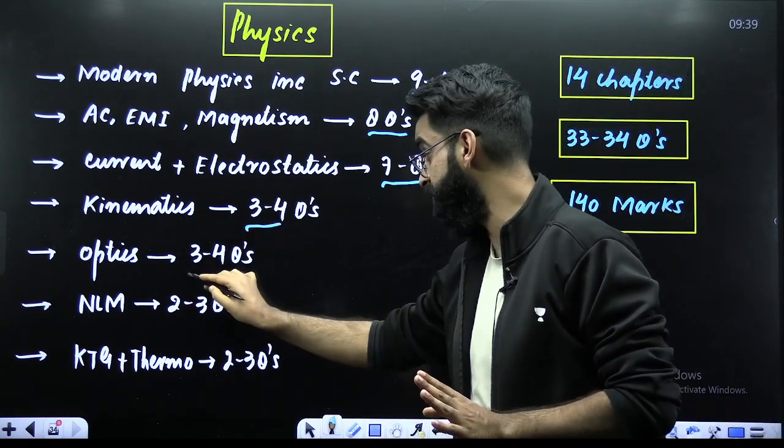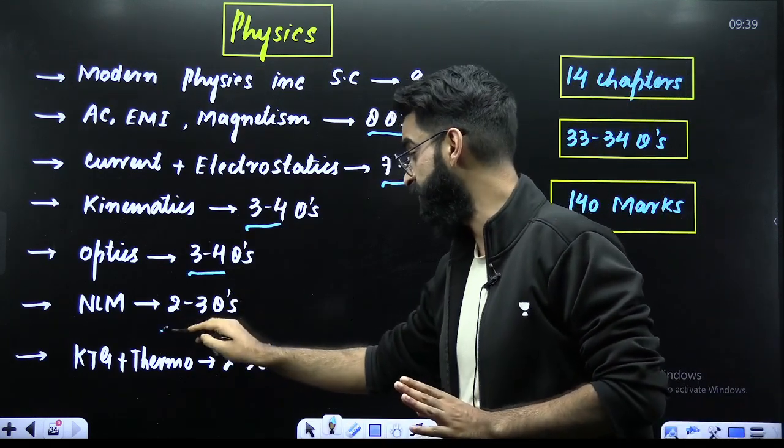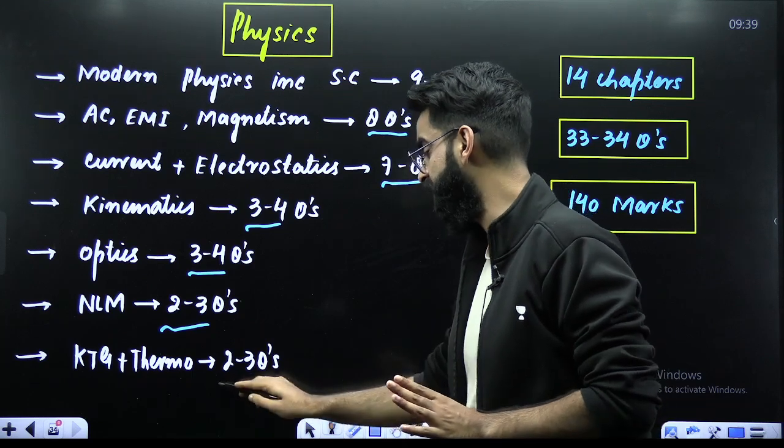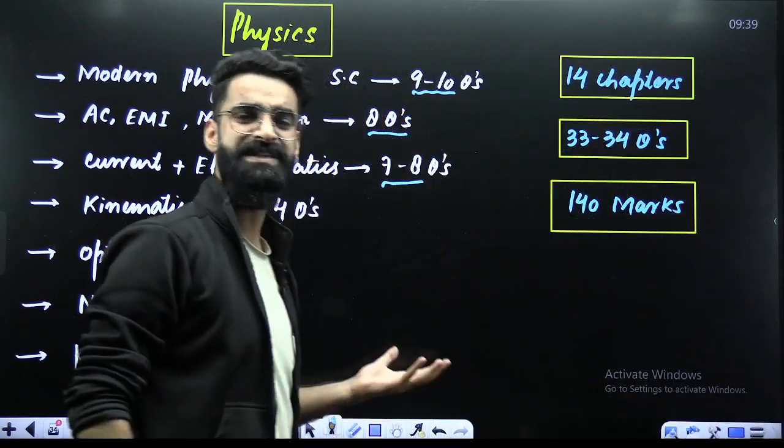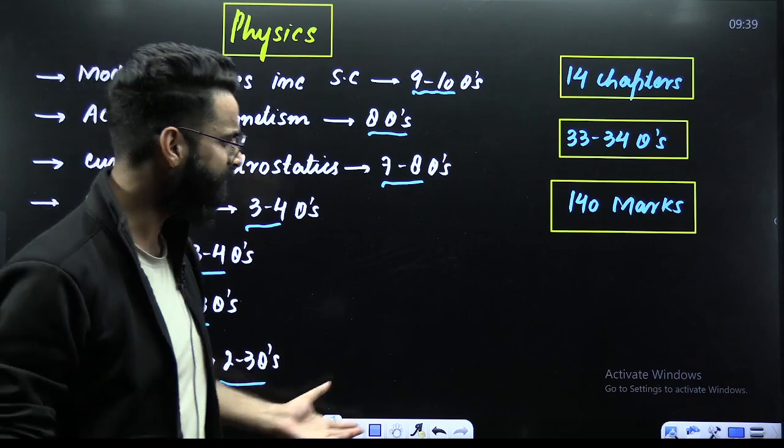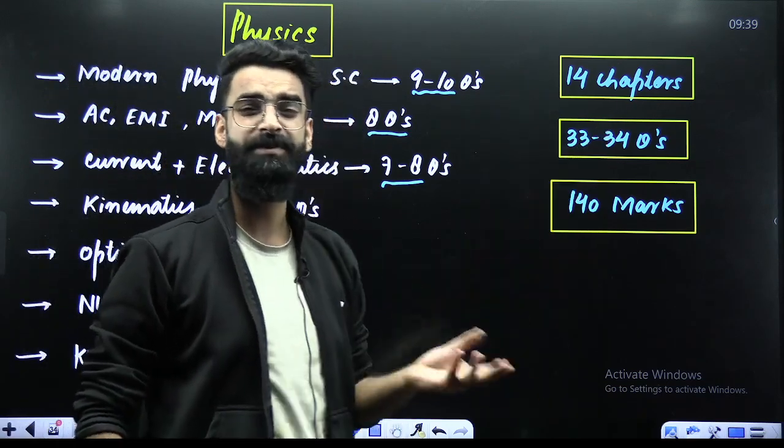Kinematics, 3 to 4 questions. Optics, 3 to 4 questions. Newton's Laws of Motion, 2 to 3 questions. KTG Thermodynamics, 2 to 3 questions. So in total, in Physics, I'm giving you these 14 chapters and if you cover these 14 chapters properly, 33 to 34 questions will be guaranteed.